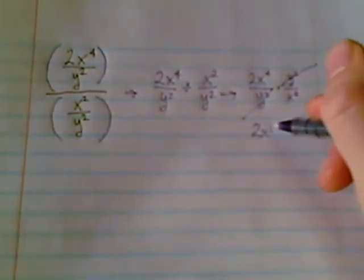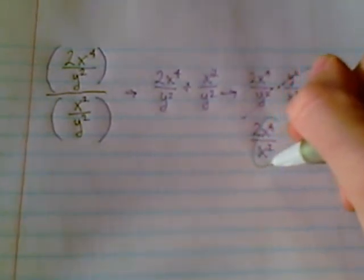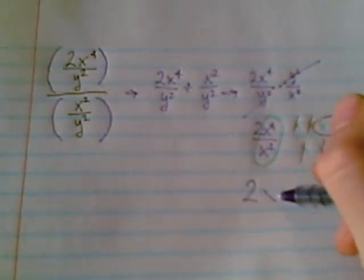Right now we're looking at 2x to the 4th over x squared. And a little bit more simplifying we can do with x to the 4th over x to the 2nd. We've got, if you're looking at this, 4 x's multiplied together in the numerator and 2 x's in the denominator. So we'll be able to do some canceling. 2 x's from the numerator cancel with 2 x's from the denominator. And we're left with just 2 x's up in the numerator. So we're looking at 2 with x times x, 2x squared. There it is. Not so bad.